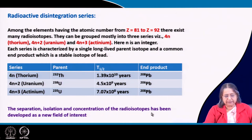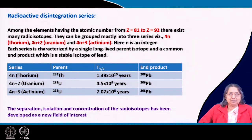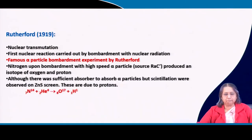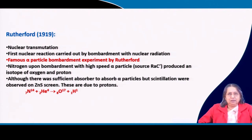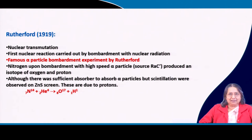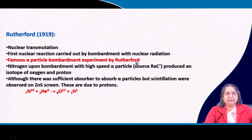The separation, isolation, and concentration of radioisotopes has developed as a new field of interest. When many radioisotopes are formed, it is very important to separate and isolate them to study their properties and use them for other purposes. Now, nuclear transmutation is a very important experiment done by Rutherford in 1919. Nuclear transmutation means a reaction by which one nucleus is transformed into another — this was the first time such a transformation was demonstrated.